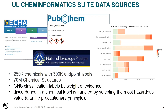Our database is built from an extensive amount of toxicity and hazard data, which we pull from the ECHA classification labeling database, the US PubChem database, as well as the National Toxicology Program. Our database has over 250,000 chemicals with 300,000 endpoint labels. There are also 70 million chemical structures that we use to build our models.